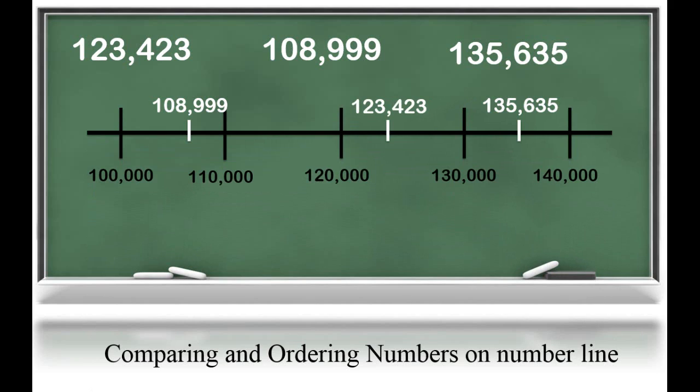Now, looking at this number line, I can see that the least number out of my three is 108,999, and the greatest number is 135,635.